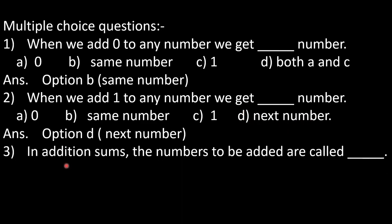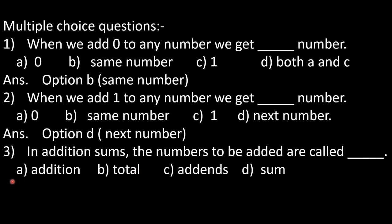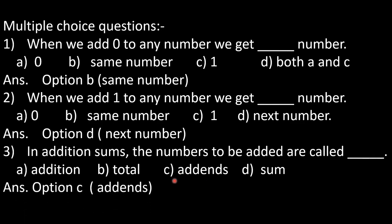In question number 3: in addition sums, the numbers to be added are called dash. The options are: addition, total, addends, or sum. The numbers that we add are called addends. So our option C is correct — addends.